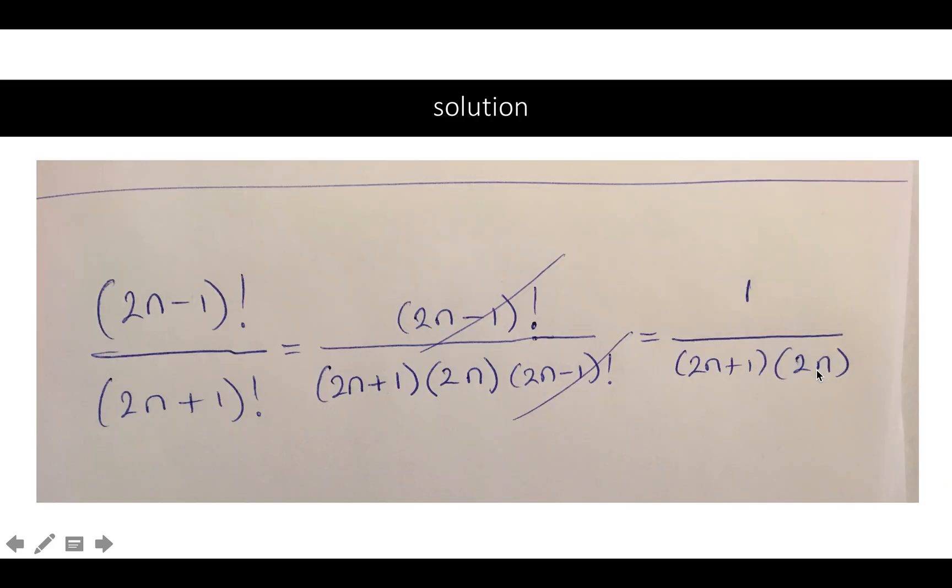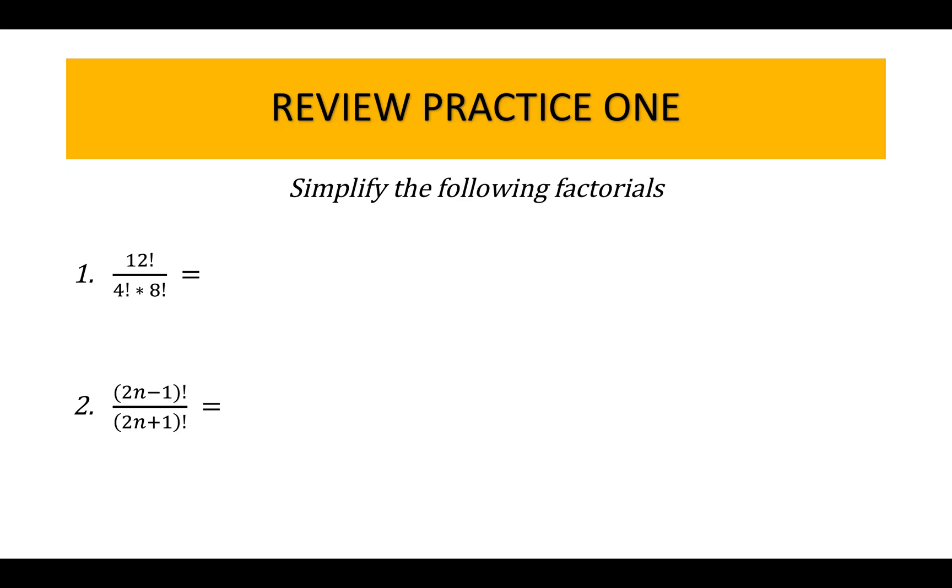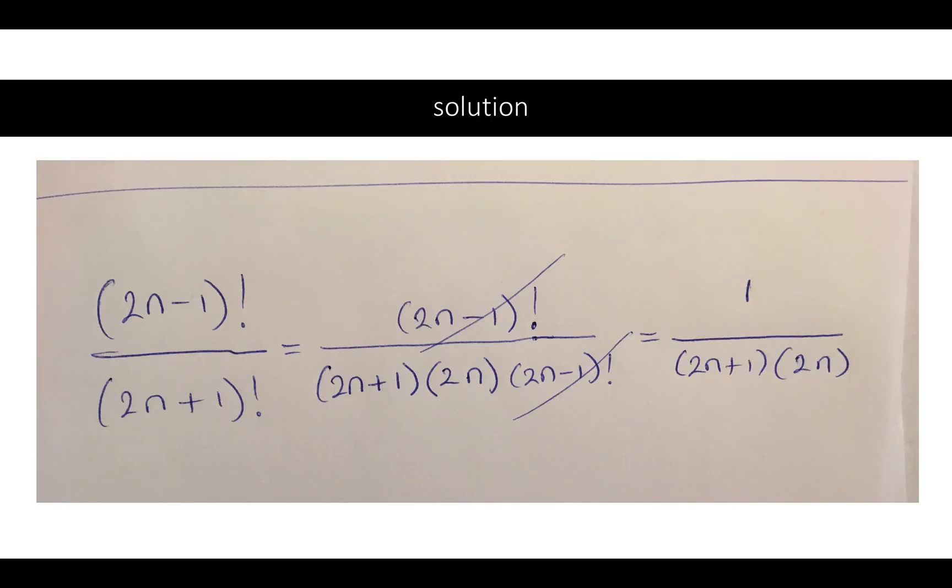Now this one, the second one: 2n minus 1 factorial over 2n plus 1 factorial. Very easy problem. Remember I gave you the hint to start with the denominator. Start with the bottom, you start with 2n plus 1, then you go to 2n, then you go to 2n minus 1.